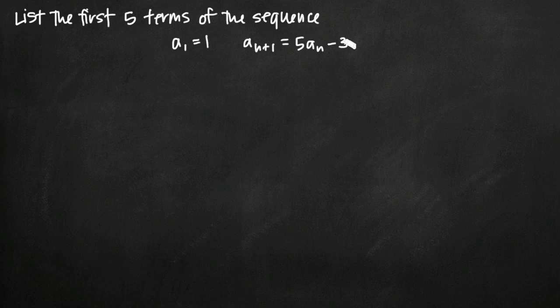In a problem like this when we're listing the first several terms, the first thing we want to do is start constructing a table of values. We know that our first term a₁ = 1, so let's go ahead and write that down. a₁ = 1.